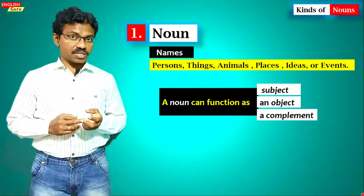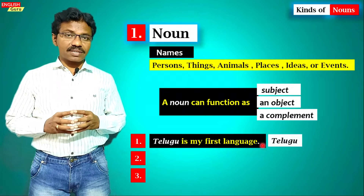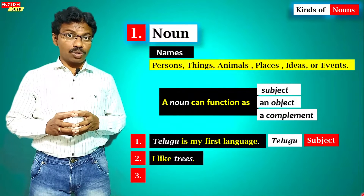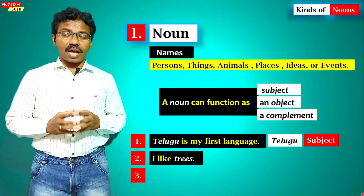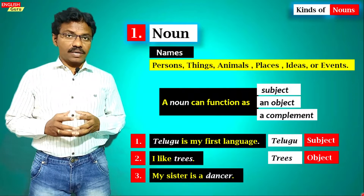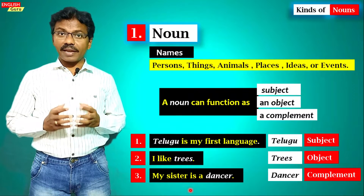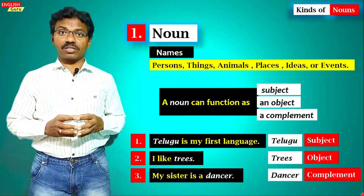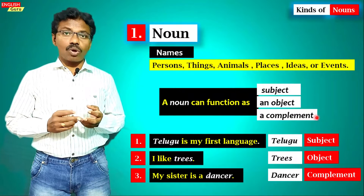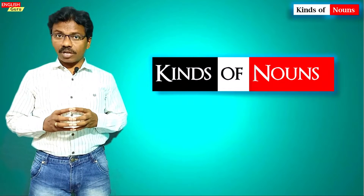A noun acts or functions as the subject of a sentence, the object of a sentence, or a complement. For example, in 'Telugu is my first language,' 'Telugu' is the subject and a noun. In 'I like trees,' 'trees' is a noun and the object. In 'My sister is a dancer,' 'dancer' is a noun and the complement of the subject.